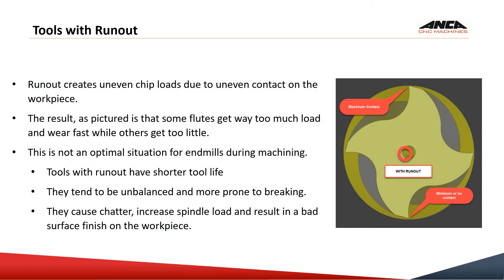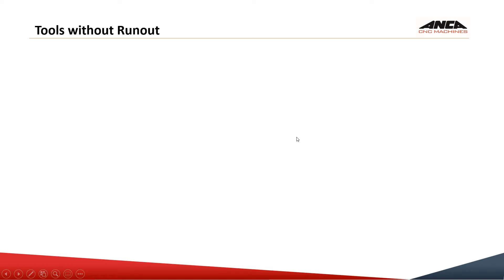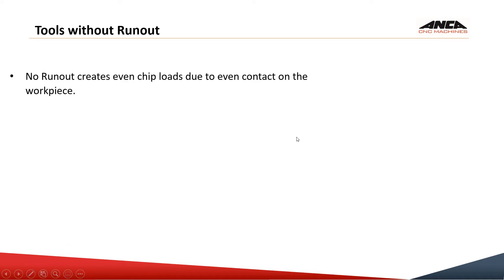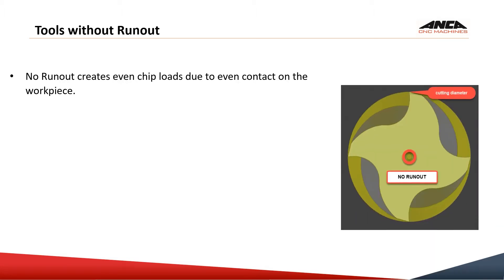In last week's tooltip we discussed the effect of a tool with runout. This week we will discuss what happens when the tool has no runout, or minimal runout. No runout creates even chip loads due to even contact on the workpiece. As you can see here, the grinding axis and the centerline of the tool axis are exactly the same, so there is no runout — the cutting diameter or the flutes contact evenly on the workpiece.